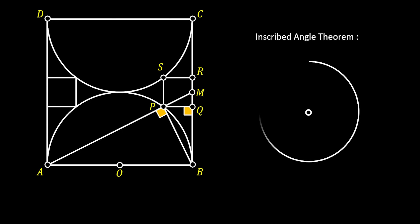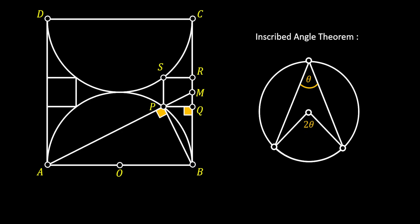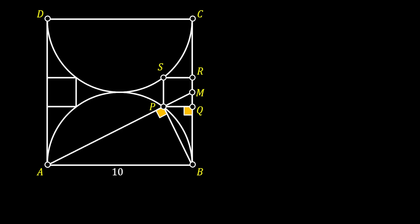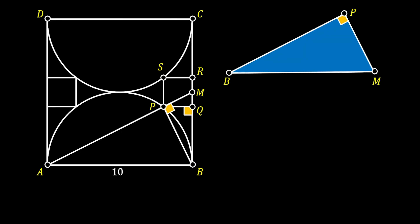We are going to use the Inscribed Angle Theorem. This theorem states that an inscribed angle inside the circle will be exactly half the measure of the central angle that intercepts the same arc. You can see that the angle at point O is equal to 180 degrees, since this is the central angle of our half circle. This means that the angle at point P is an inscribed angle, so it must be a 90-degree angle. From this, we can conclude that the angle on the right side of point P is also a right angle. So the triangle BMP is actually a right-angled triangle.